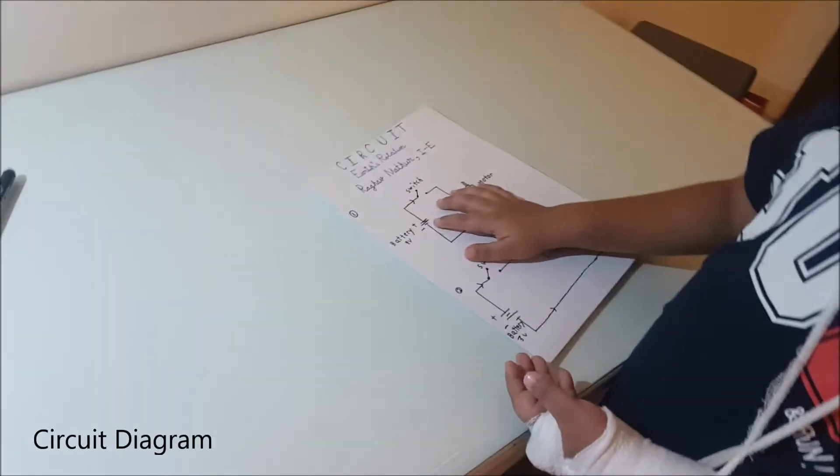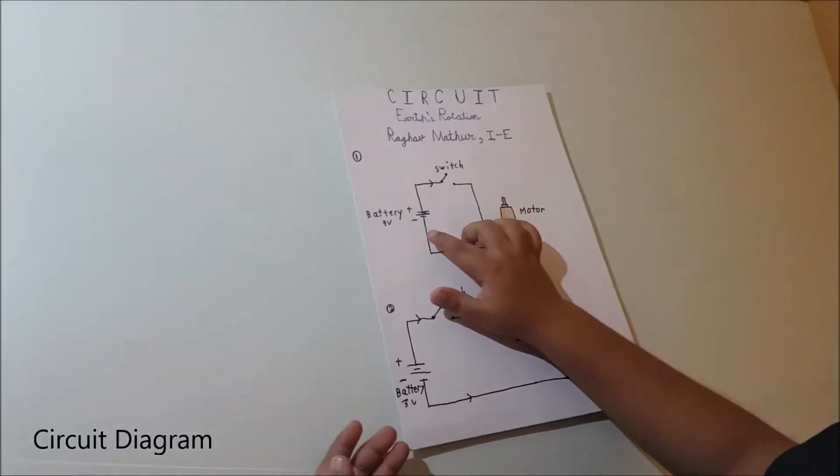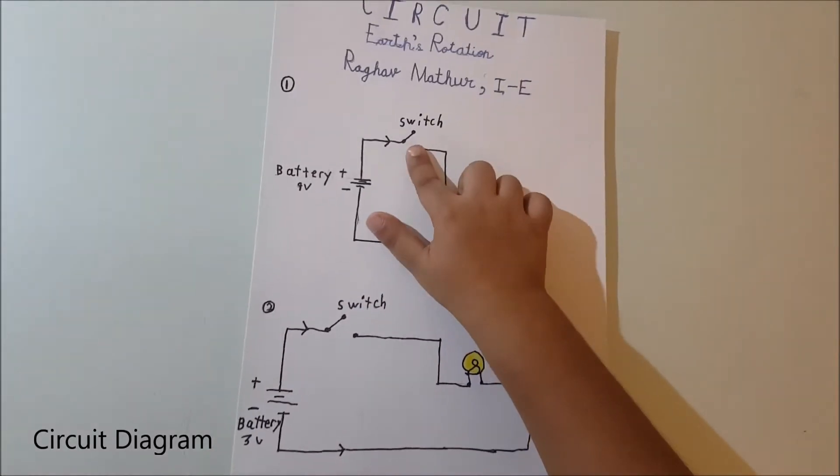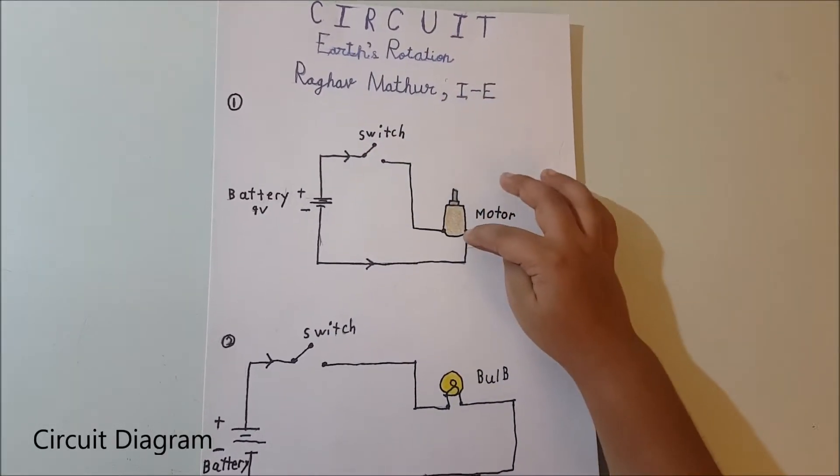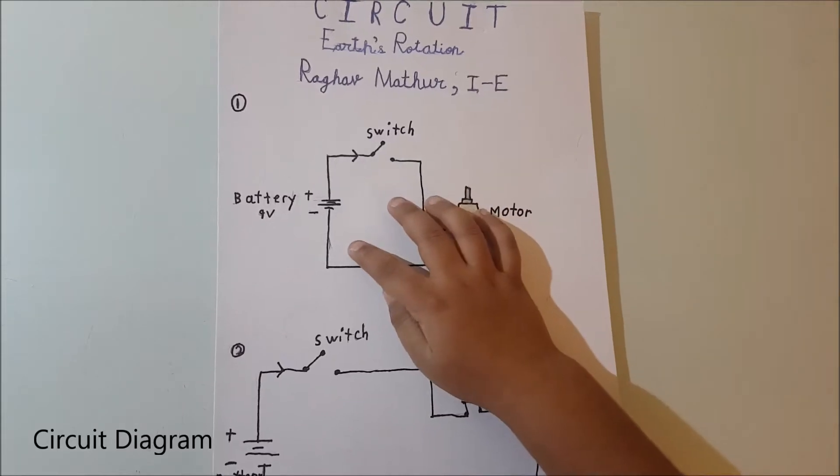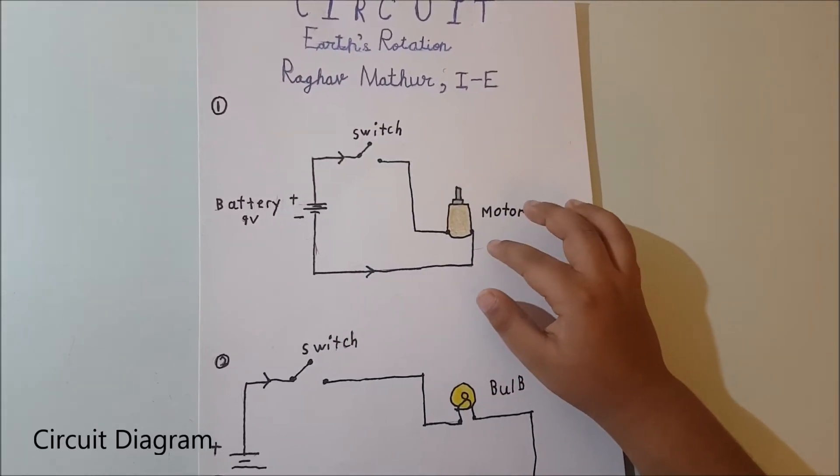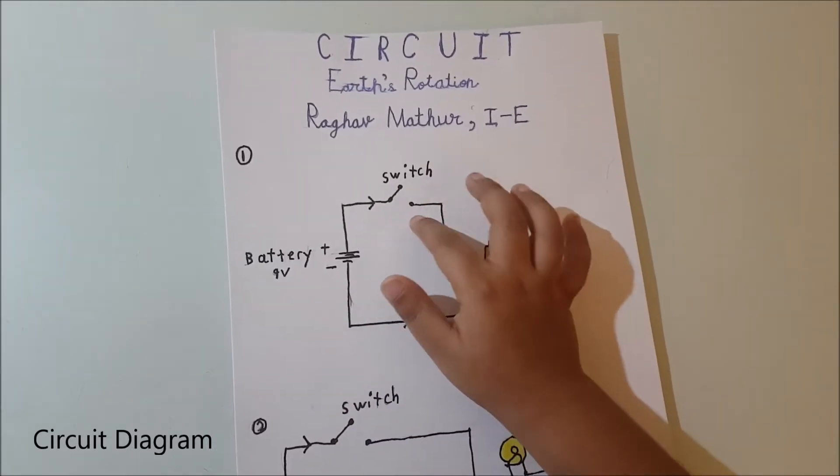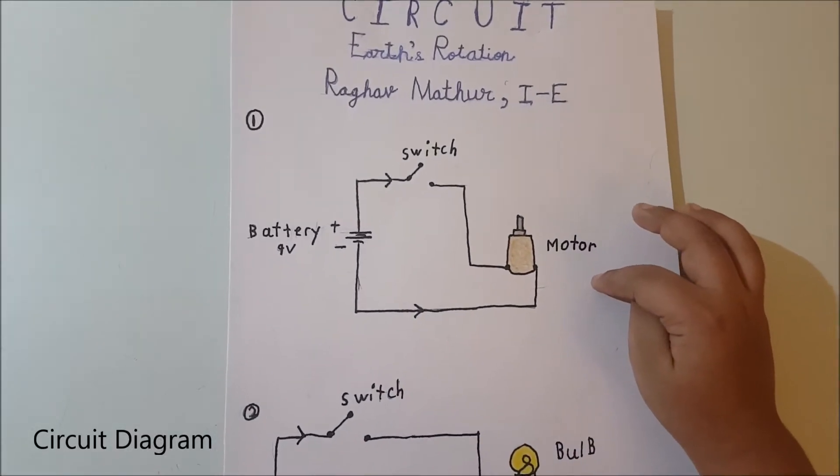There is a 9 volt battery, one wire attached to the switch and then switch to motor, and then the other wire attached to motor straight. When the switch is turned on, the motor runs.